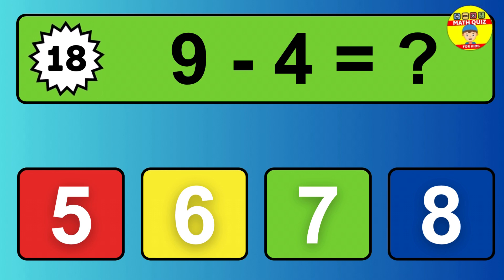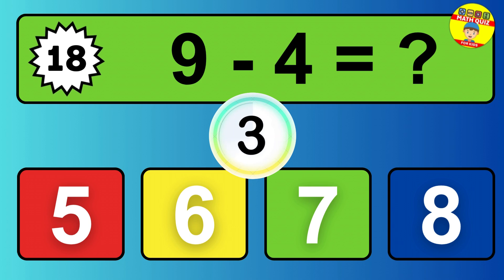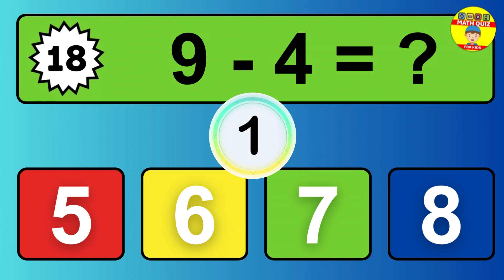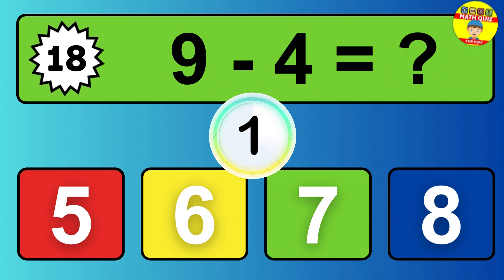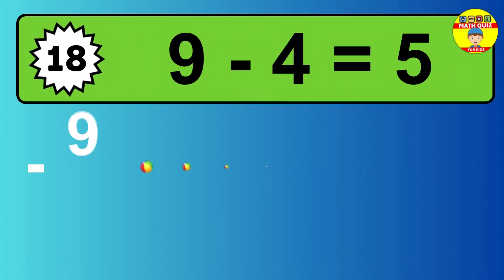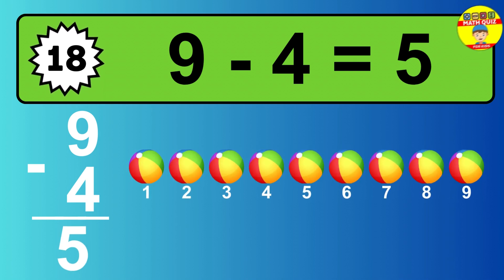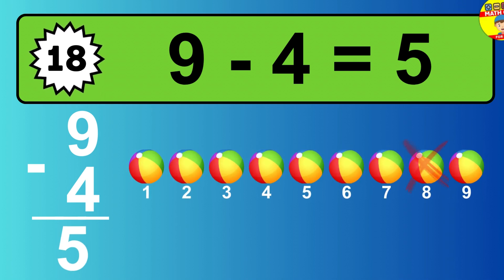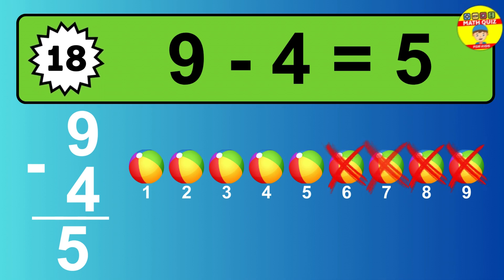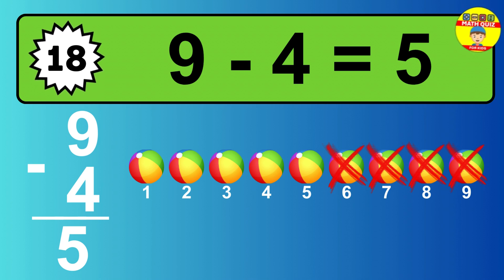Question eighteen. Nine minus four equals what? So the answer is, nine minus four is five. Let's count it. One, two, three, four, five.